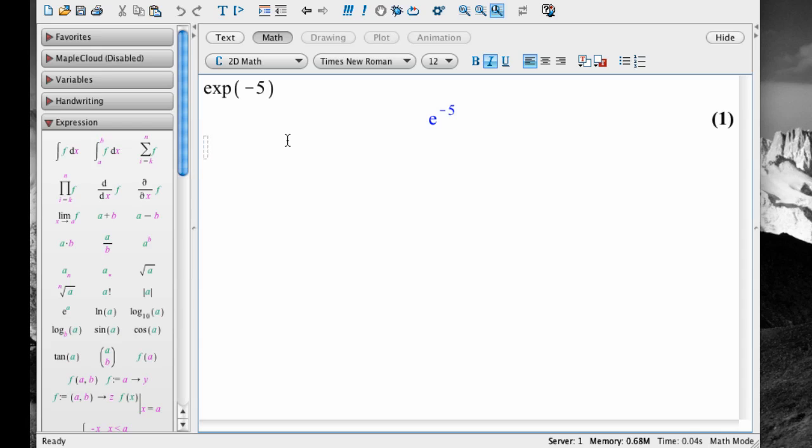To take a square root, for example, we use the function sqrt. For example, here's the square root of 2. We type sqrt, open parenthesis, 2, then close parenthesis, and hit enter.